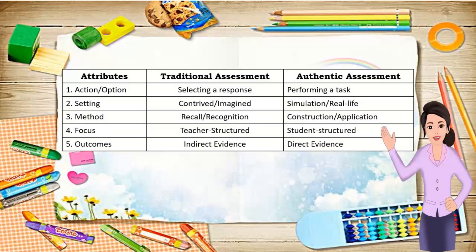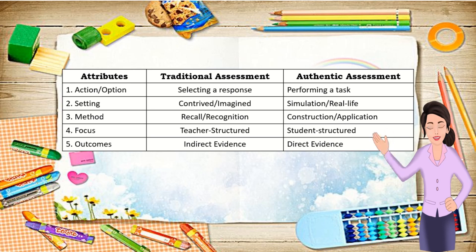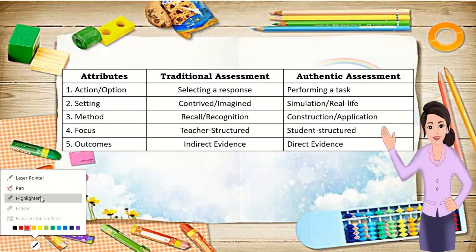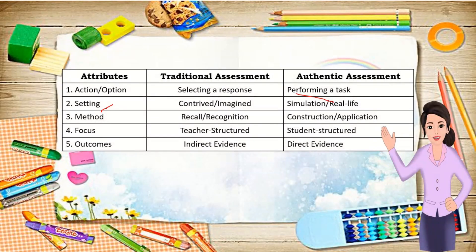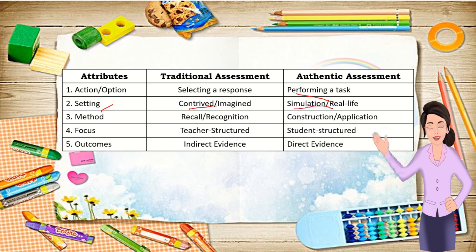Let us now differentiate traditional assessment and authentic assessment. We have five attributes for comparison. In the first attribute — action and option — traditional assessment involves selecting a response, while authentic assessment requires performing a task. In the second attribute — setting — traditional assessment is contrived or imagined, while authentic assessment simulates a real-life situation.